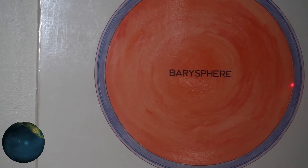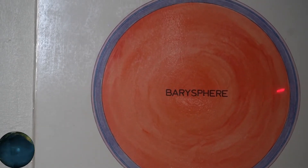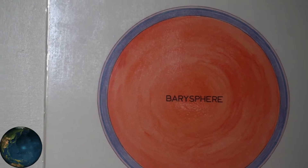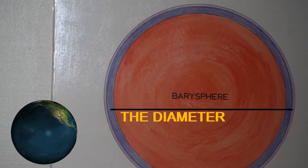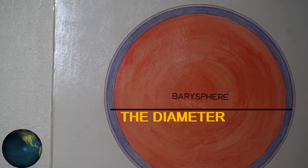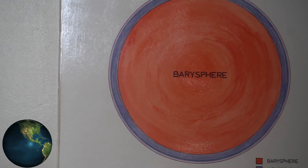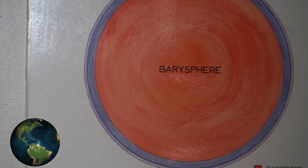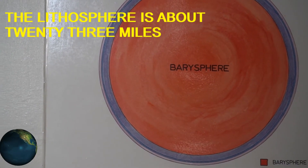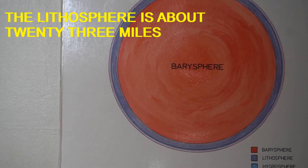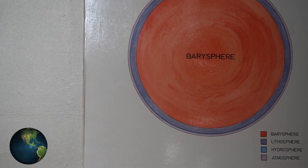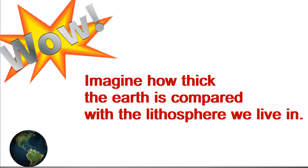If you compare that with the rest of the earth, you can see that the lithosphere is very, very thin. The diameter of the earth — that is a straight line across the center — is about 8,000 miles. The lithosphere, the part that we live on, is about 23 miles thick.